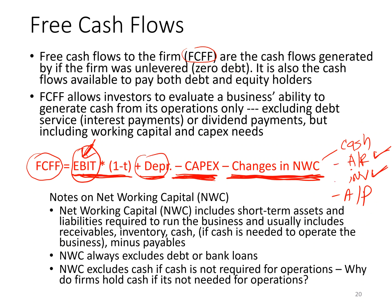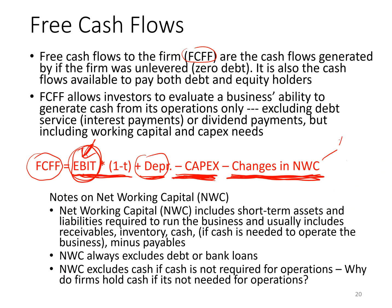To be clear: I subtract changes in accounts receivable, subtract changes in inventory, and add changes in accounts payable. The reason I add changes in accounts payable is that if I bought goods to generate profit but never paid for them, I need to add that back. So by subtracting the change in net working capital, I'm effectively subtracting increases in accounts receivable, subtracting increases in inventory, and adding increases in accounts payable to get at the true cash the business is generating. Net working capital always excludes debt and bank loans.